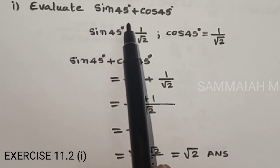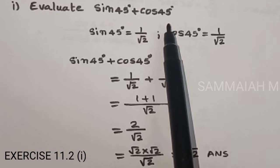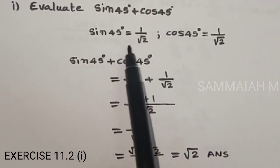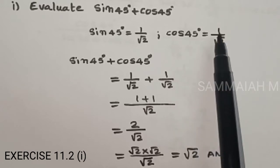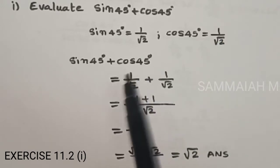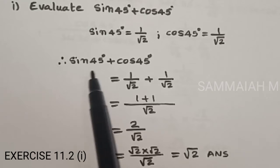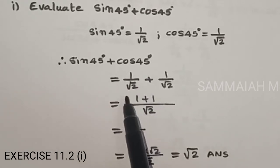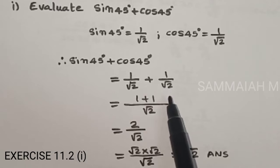Evaluate sin 45 degrees plus cos 45 degrees. Sin 45 degrees is 1 by root 2, cos 45 degrees is 1 by root 2. Therefore, sin 45 degrees plus cos 45 degrees is equal to 1 by root 2 plus 1 by root 2.